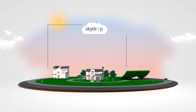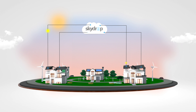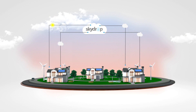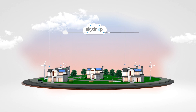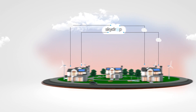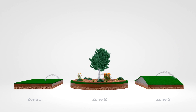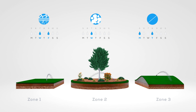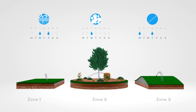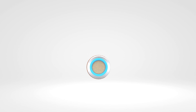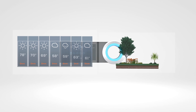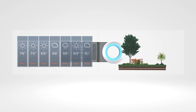SkyDrop connects to the cloud to monitor hyperlocal weather data, often from a weather station in your own neighborhood. And because your zones are independent of each other, SkyDrop will create a watering schedule perfectly suited for each zone. It's like your own personal weatherman and landscape specialist working together to make your lawn amazing.